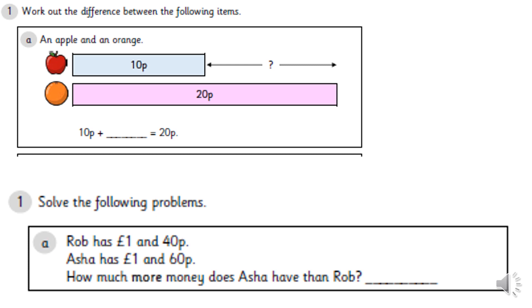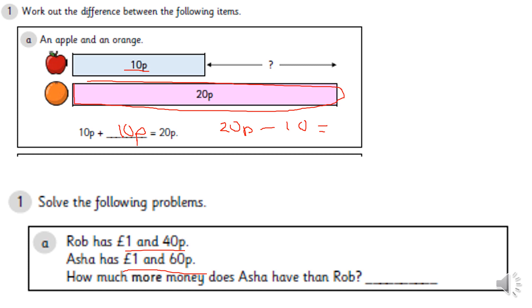Your task today is to find the difference like we were doing. Here is the whole part of your bar model — the whole amount is twenty pence, the apple costs ten pence, so twenty pence take away ten equals ten pence, and ten pence plus ten pence equals twenty pence. Then there are problems where Rob has one pound and forty pence and Asha has one pound and sixty pence — the difference between forty and sixty is twenty pence, so Asha has twenty pence more than Rob. Have a go and see how you get on. Bye-bye!